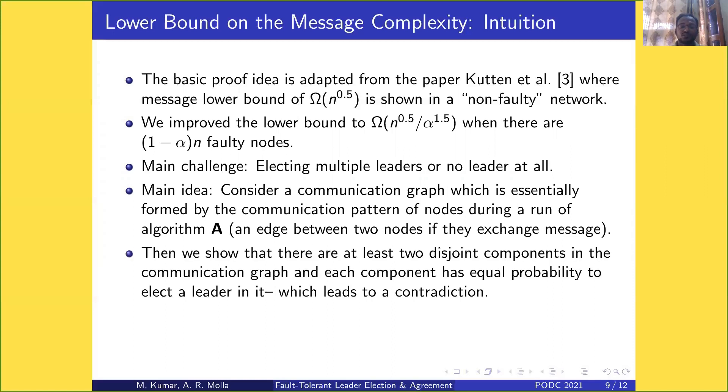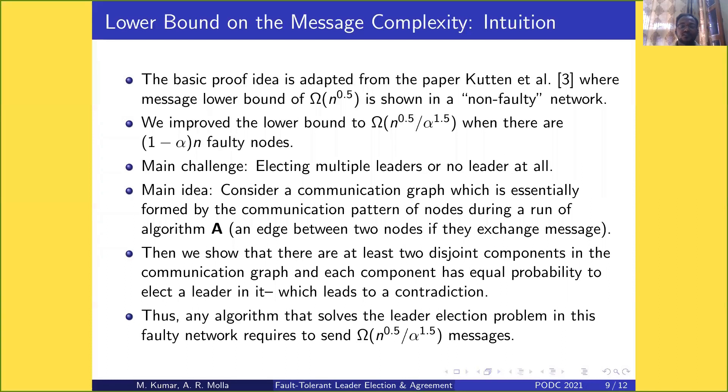Then we show that there are at least two disjoint components in the communication graph, and each component has equal probability to be elected as leader. This leads to a contradiction, and we establish the aforementioned lower bound.